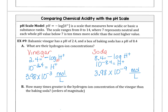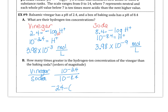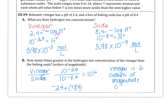The vinegar is 6 orders of magnitude greater than the soda. Dividing 10^-2.4 by 10^-8.4, and subtracting exponents, gives 10 to the 6th power — so the vinegar is 10^6 times more acidic than the baking soda. That finishes our lesson for 2.9, just a general review of using log properties and some practical applications.